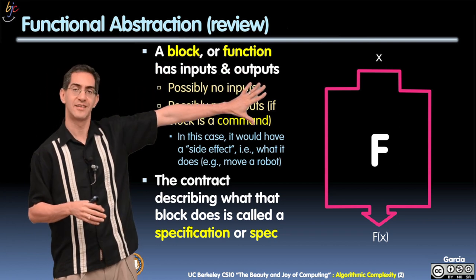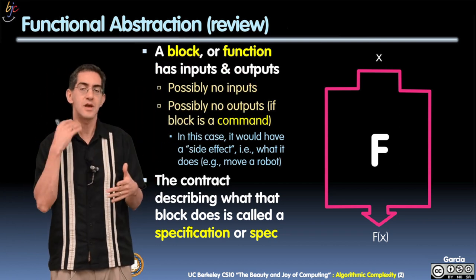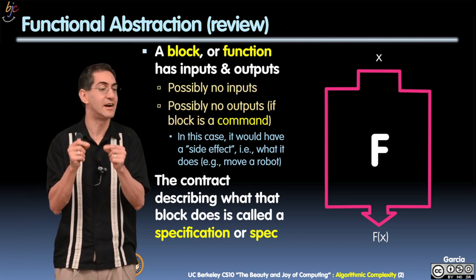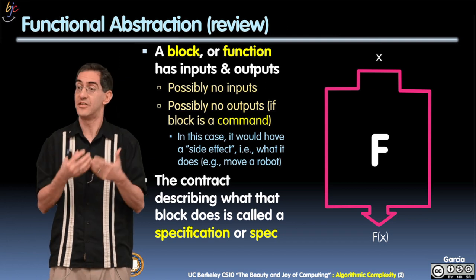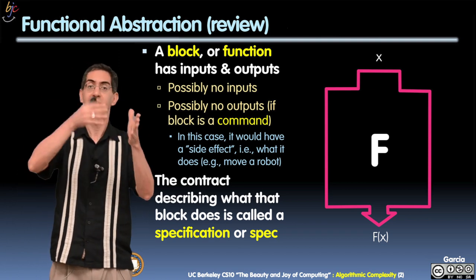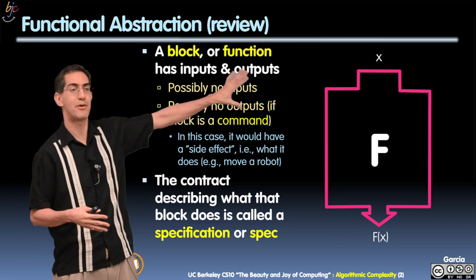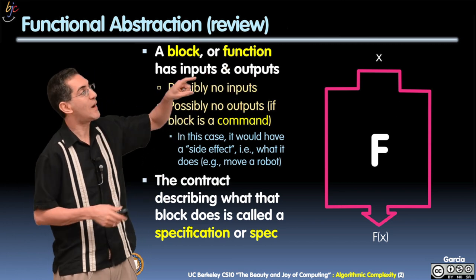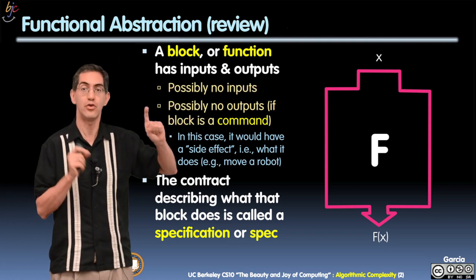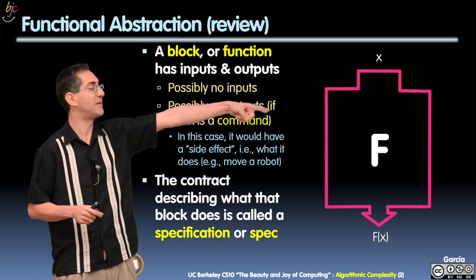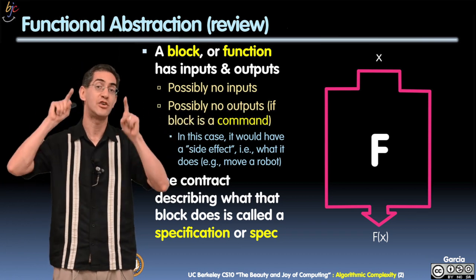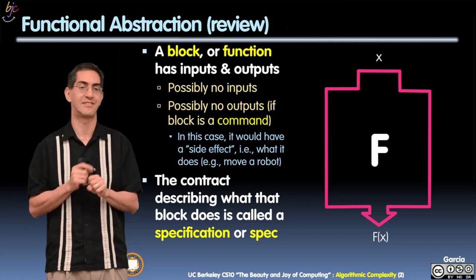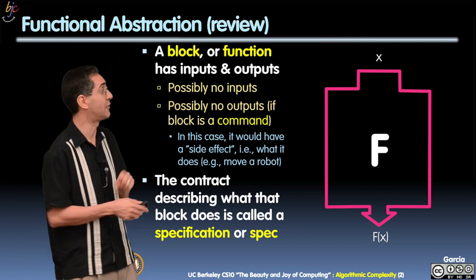There is a contract which describes what that function does. This is part of the abstraction. This is getting back to the first lecture we had on abstraction. This is functional abstraction at its finest. You have no idea how f does its work. All you know is with that x, there'll be some f of x at the bottom and you have no idea, nor should you care how it gets done, as long as it adheres to the spec.